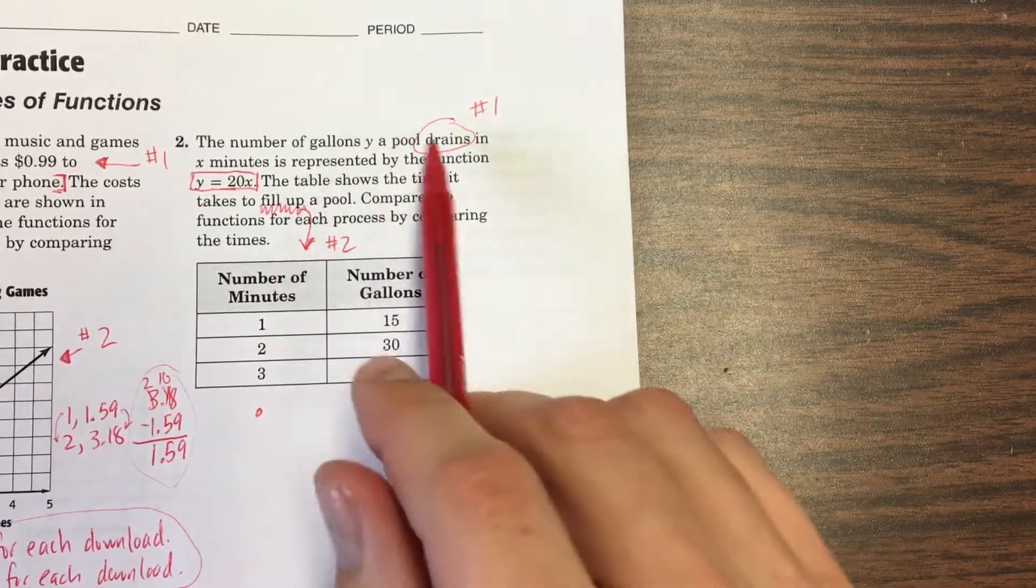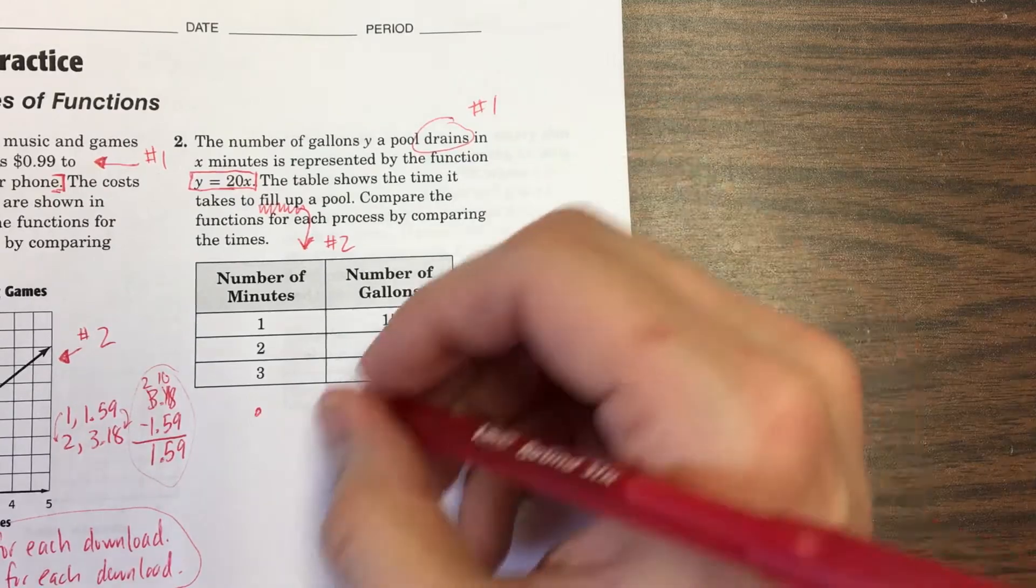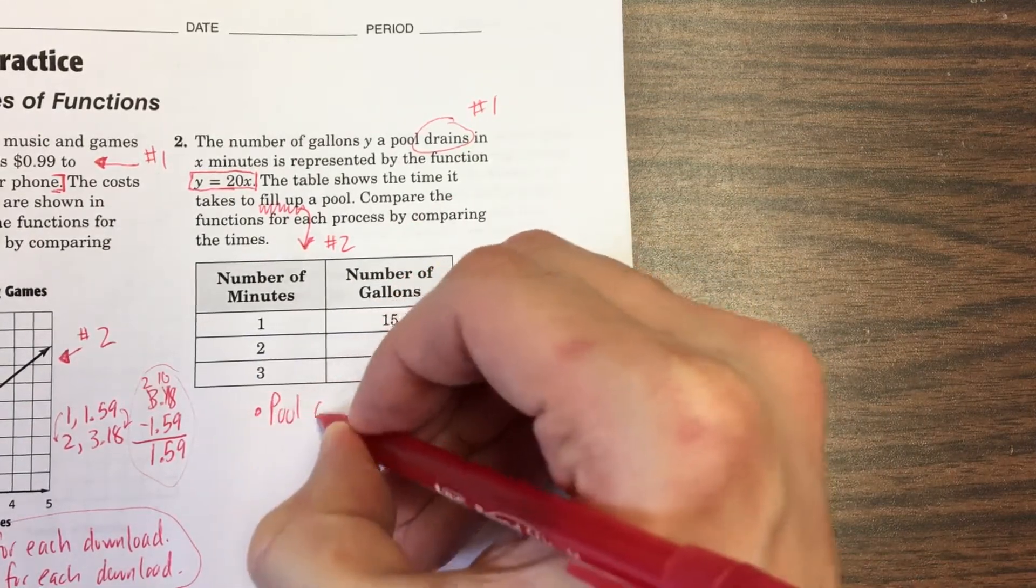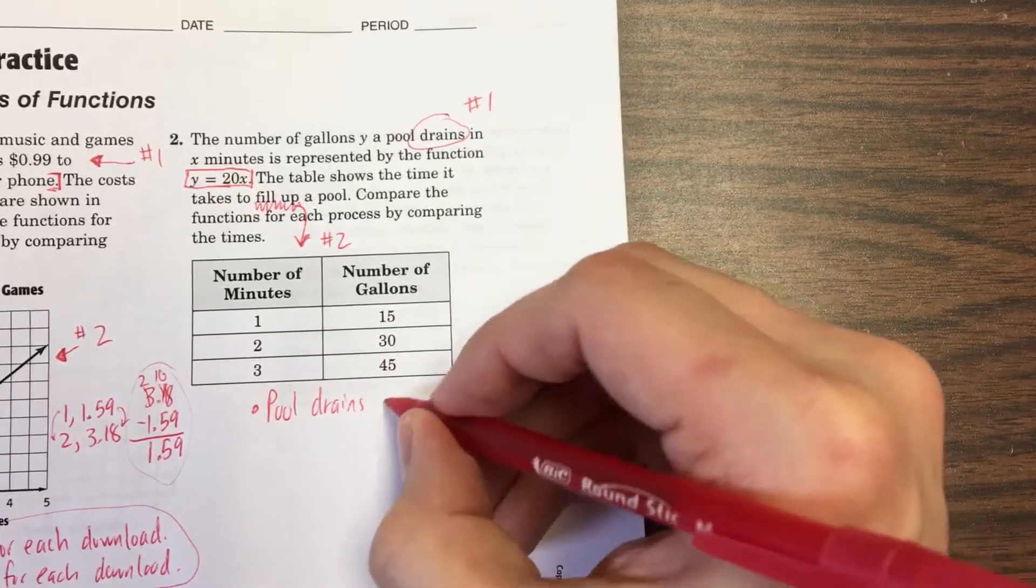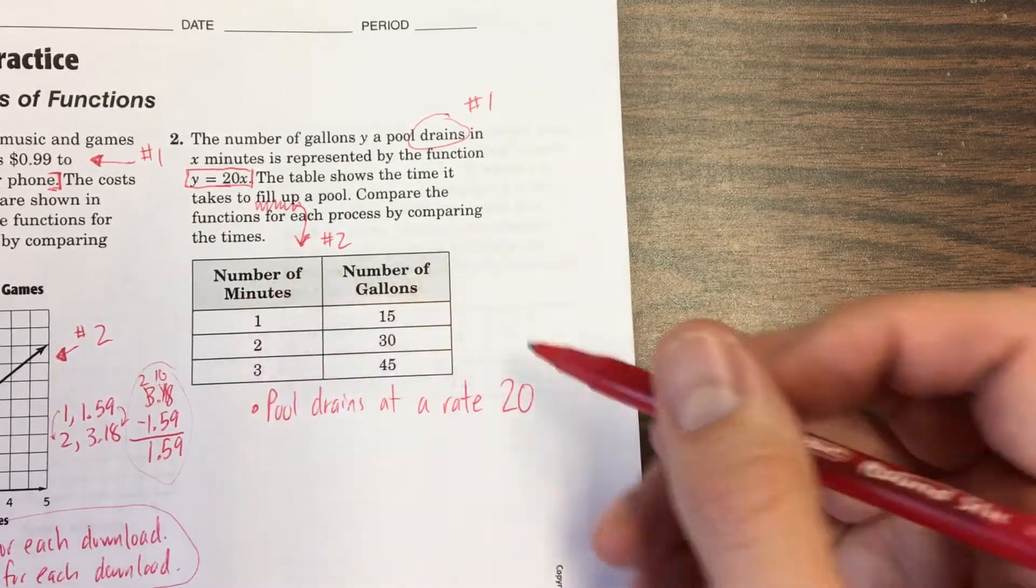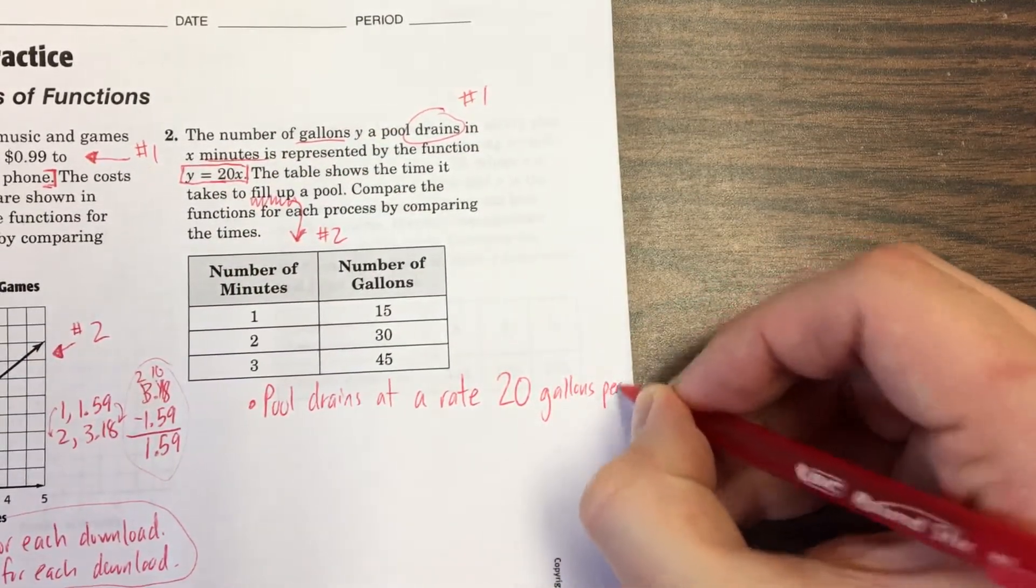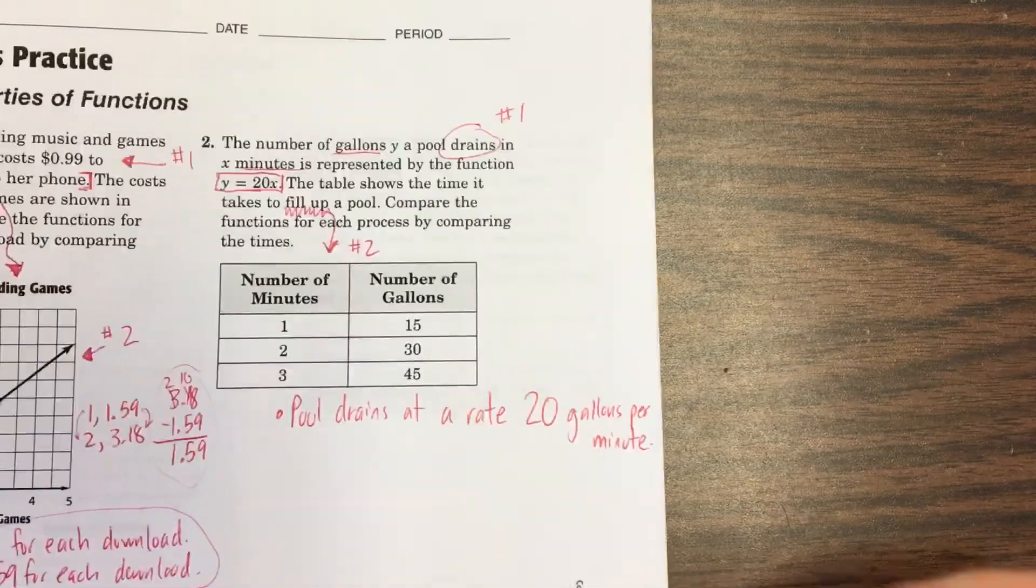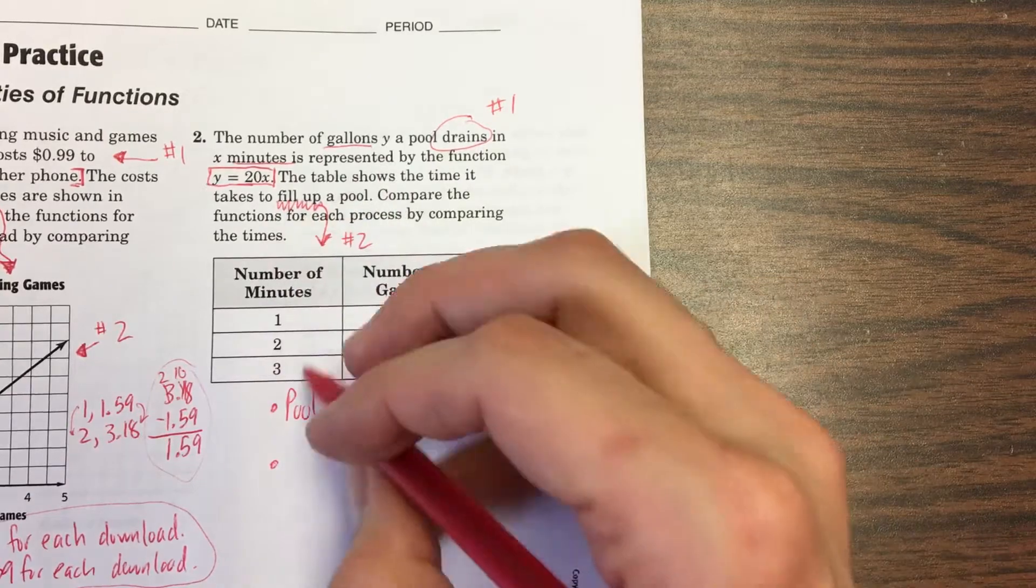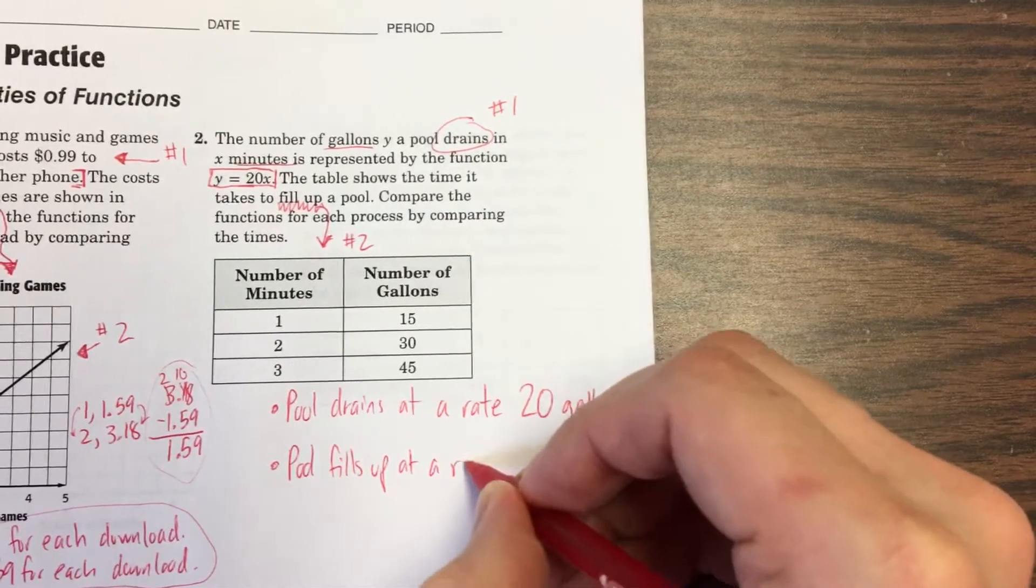Okay, pretty straightforward. The pool drains with this function y equals 20x. Do you know what that means? Y equals 20x. This is our slope. Our slope is 20. That means this drains at a rate of 20 gallons per minute. So every minute, it can drain 20 gallons out of the pool. Okay, that was just from the equation.